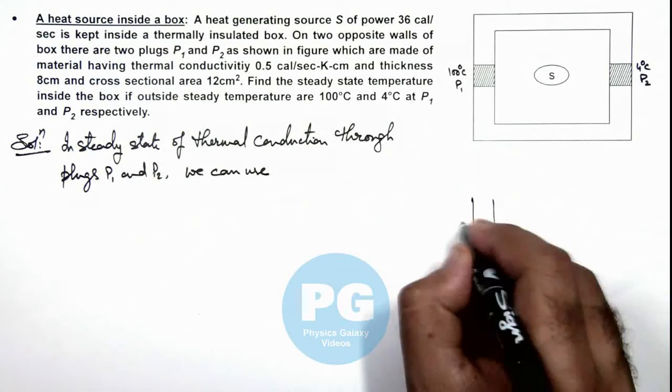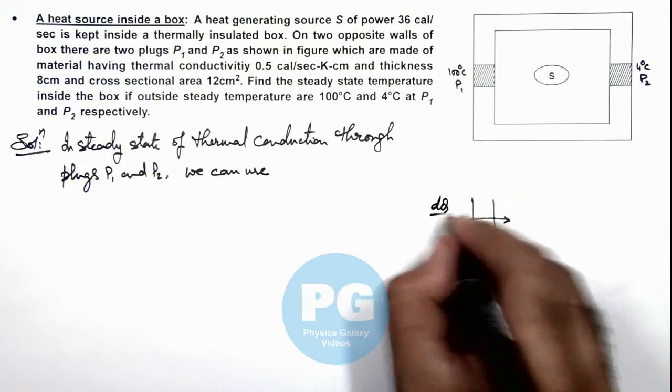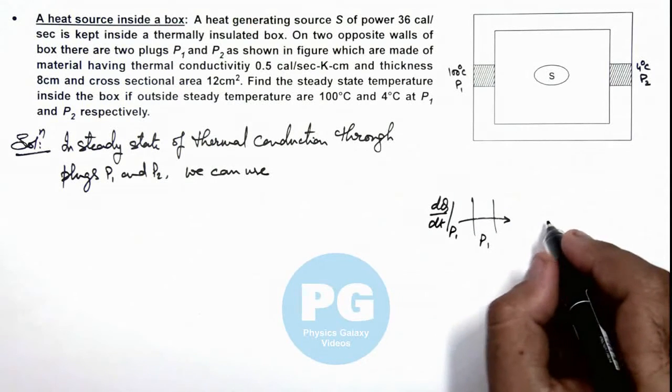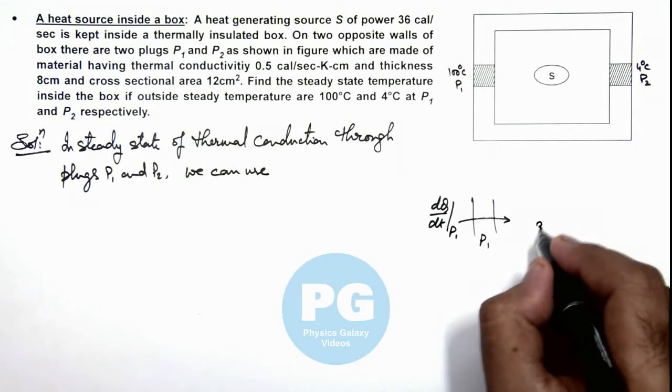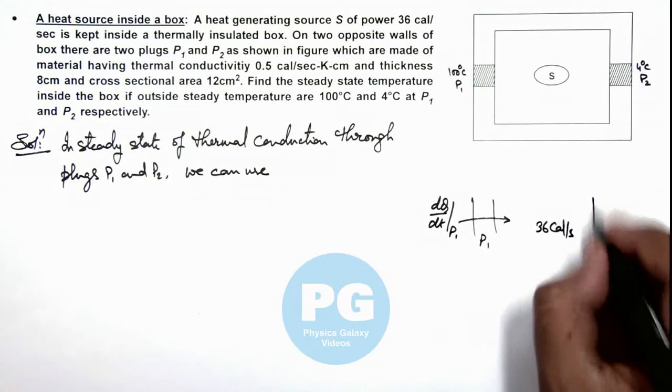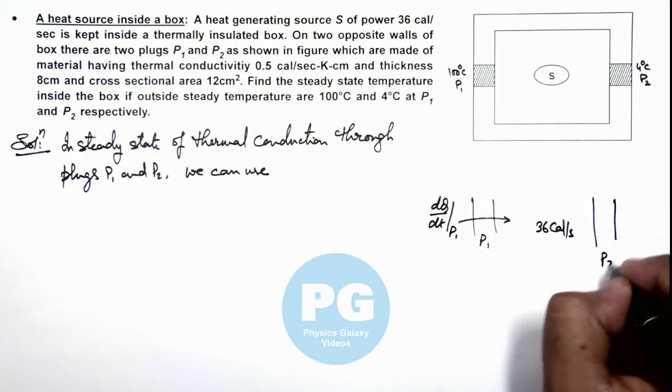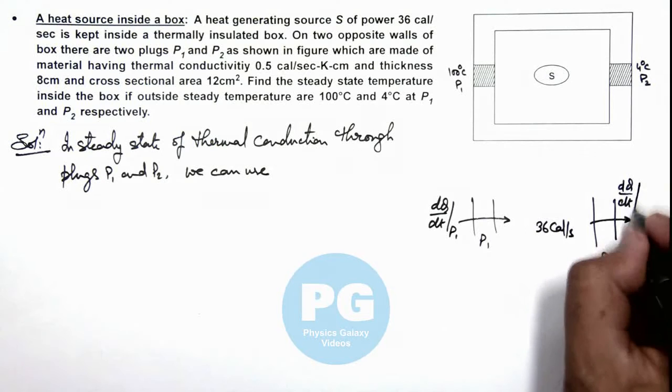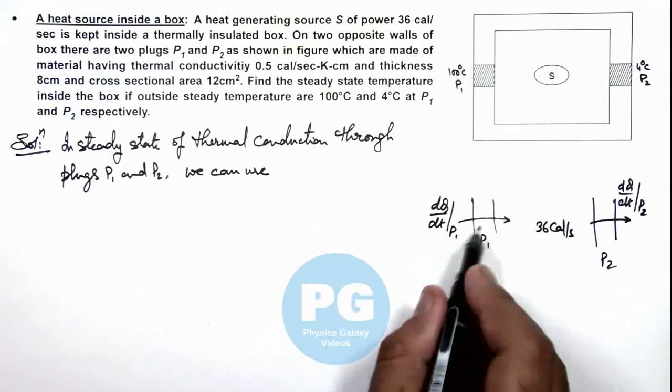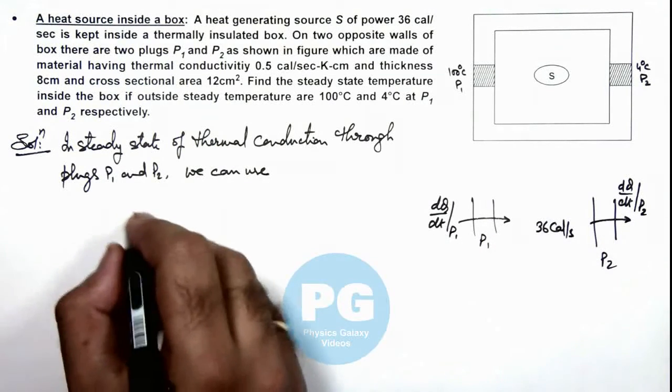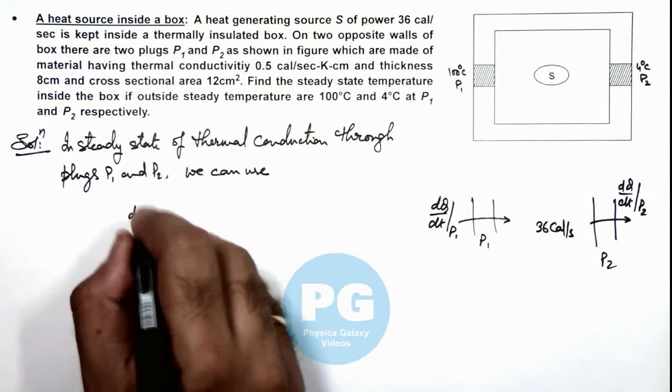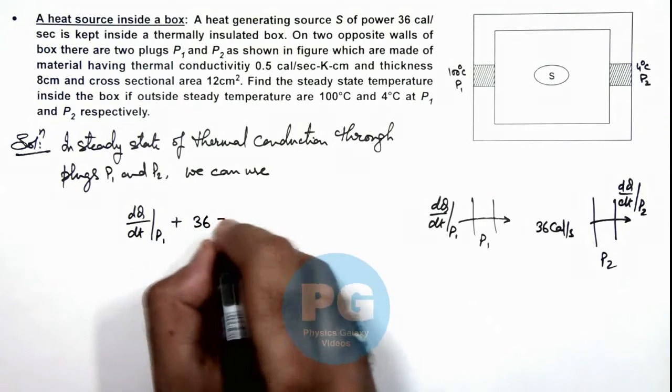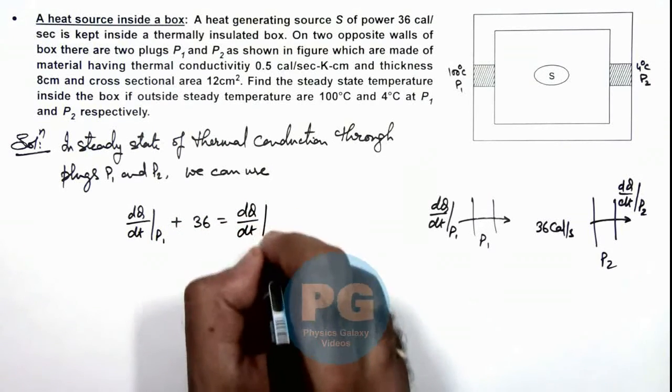dQ/dt at P1 heat is supplied, and here heat is being generated at a rate of 36 calories per second, and from the other plug P2 the heat which is going out is dQ/dt P2. Then we can write in steady state of thermal conduction through both of these plugs by energy conservation we can write dQ/dt at P1 plus 36 should be equal to dQ/dt at plug P2.